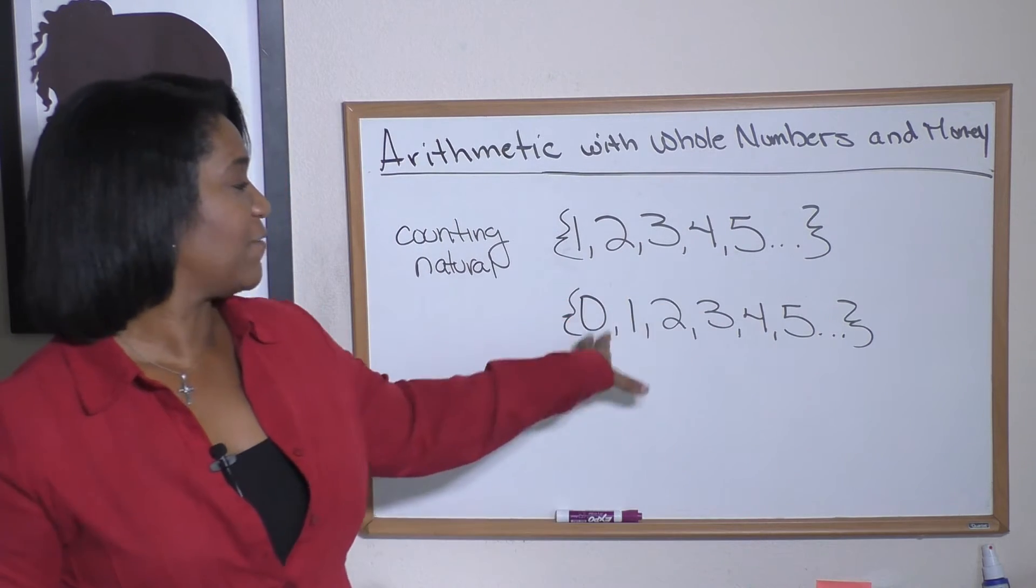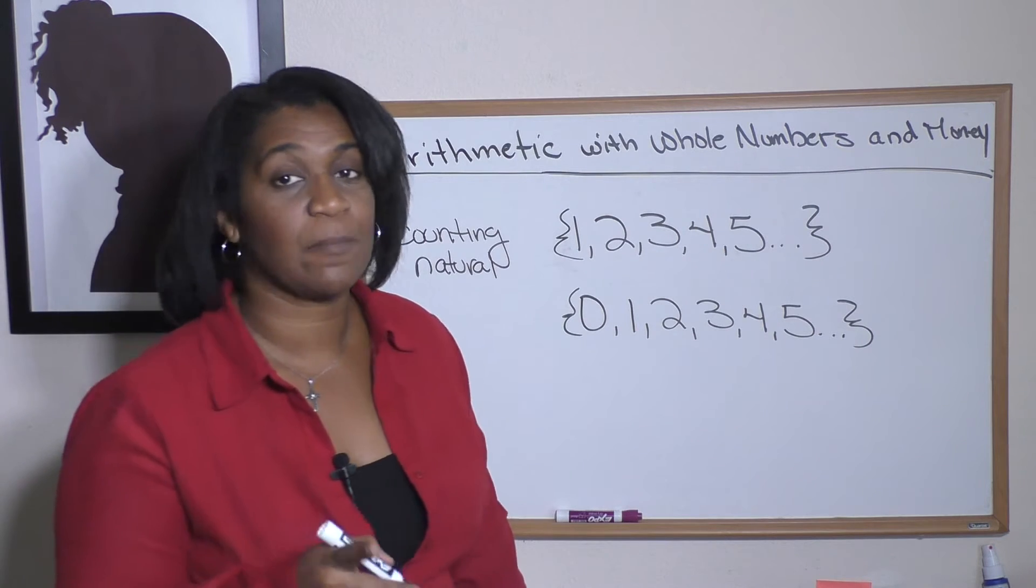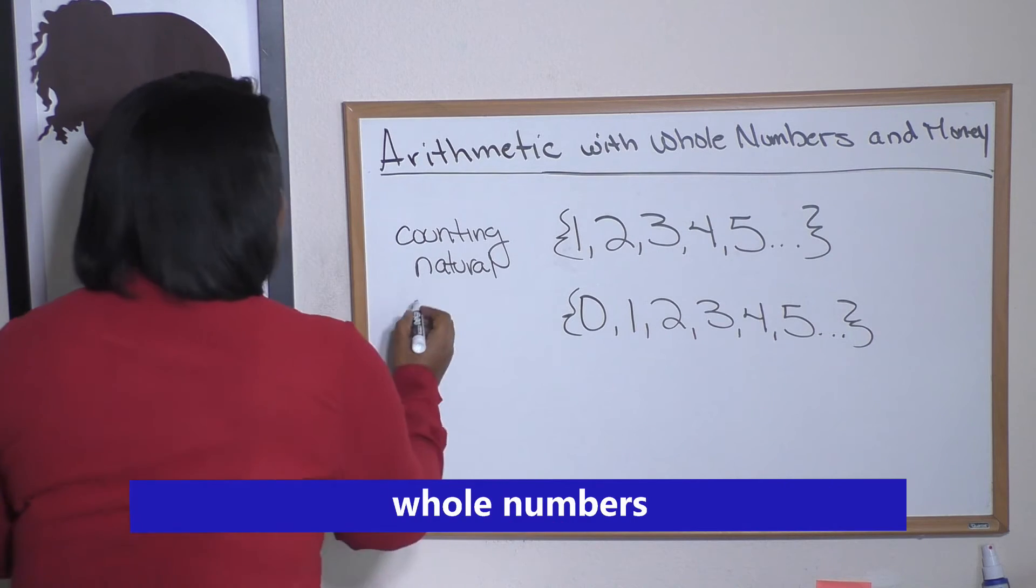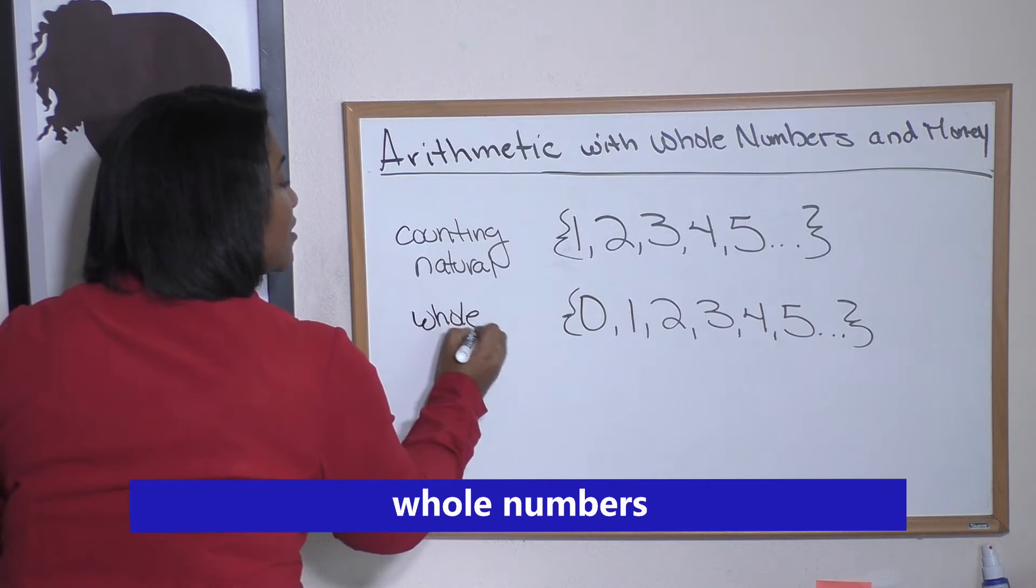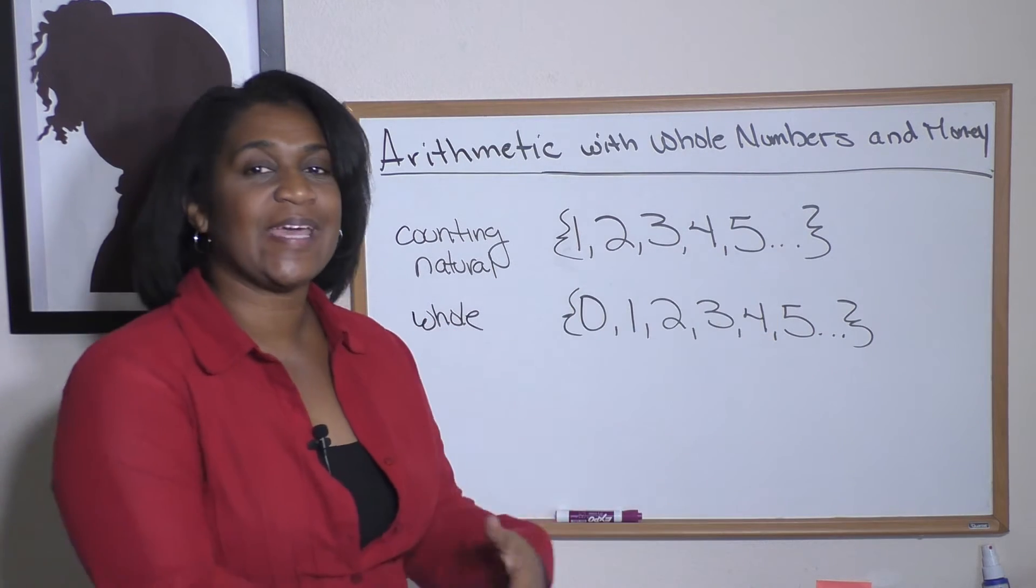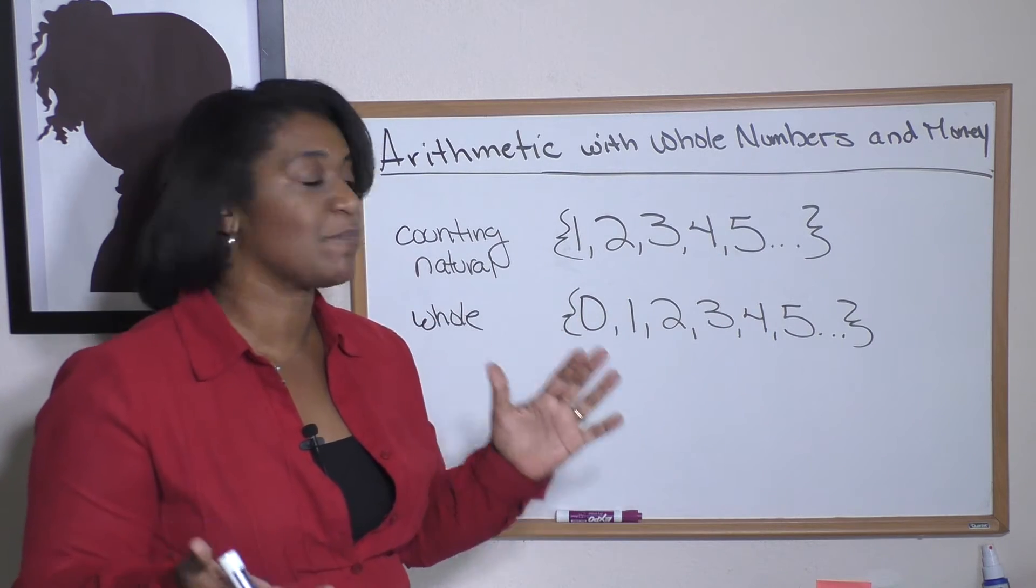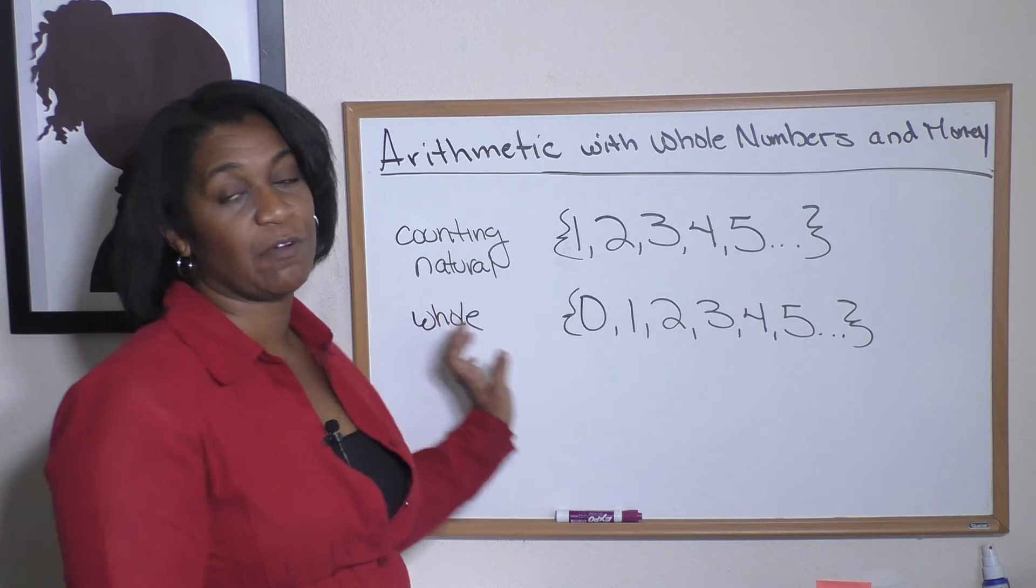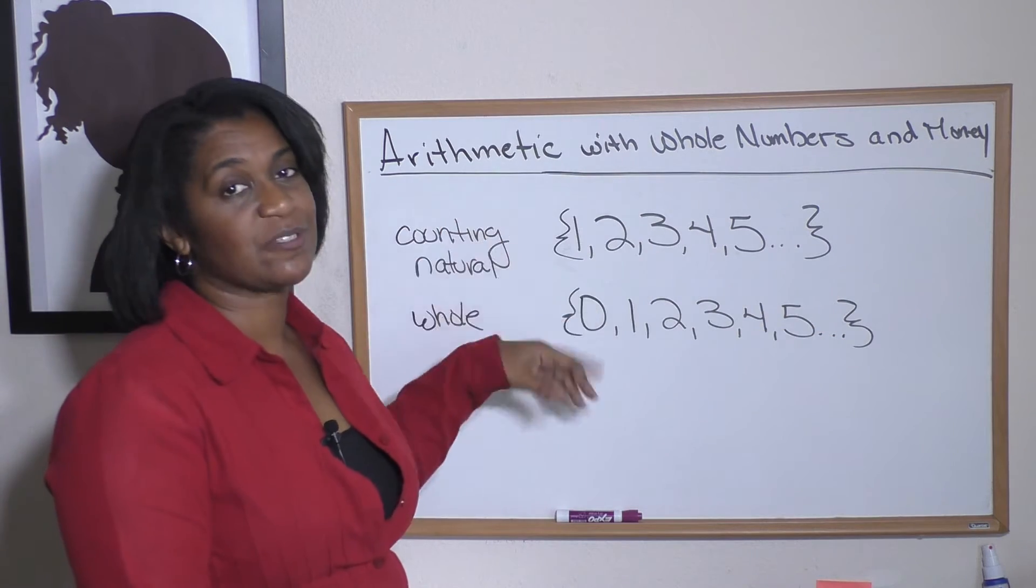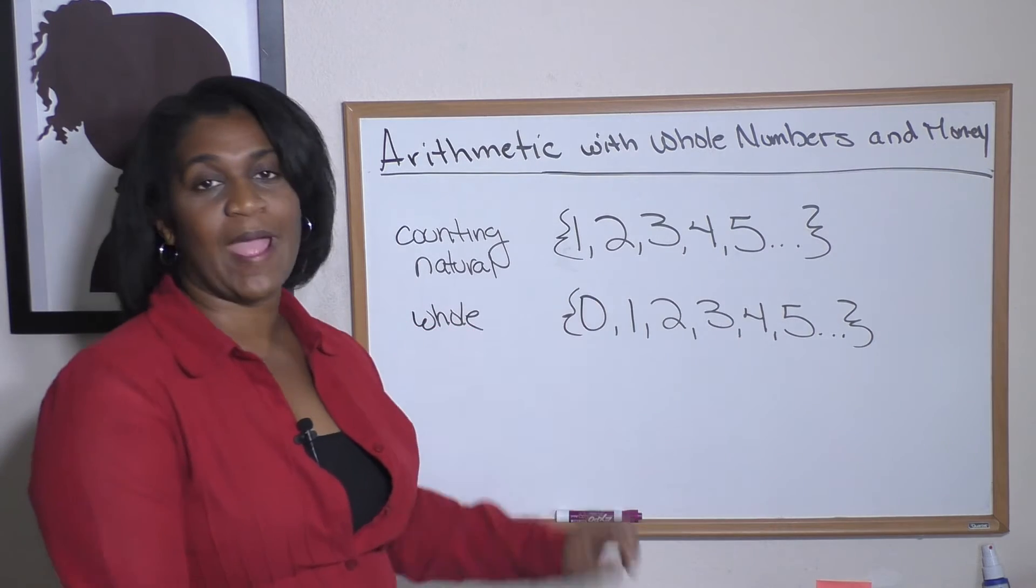This next one, you notice it's the same set of numbers, but it has the zero on it. So this set of numbers is called whole numbers. Whole numbers includes the zero. Notice I am not including any negative numbers in this. Whole numbers are from zero up; counting numbers are from one up.